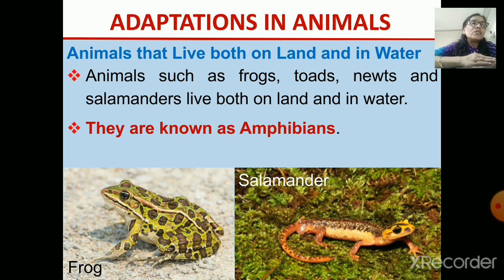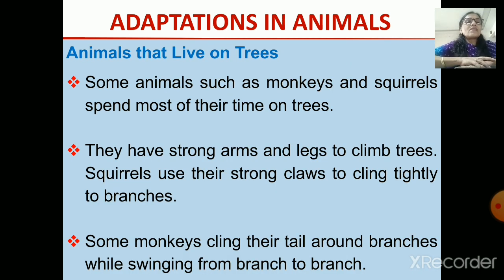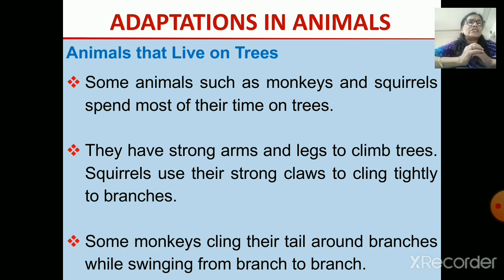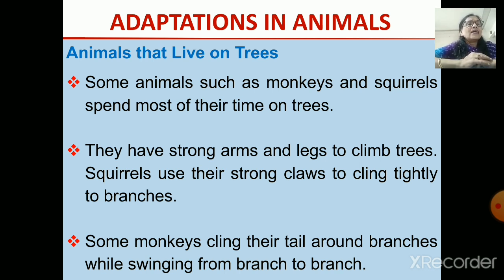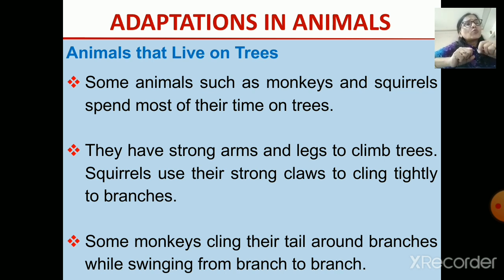These animals are known as amphibians, which are able to live on land and in water both. Some animals live on the trees — they spend most of their time on the trees. Such animals are monkeys and squirrels. They have got strong arms and legs so that they can cling to the branches and swing and climb very fast.